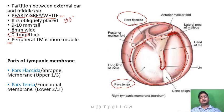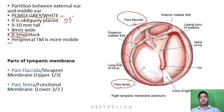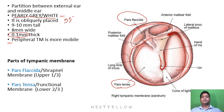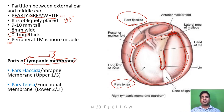What is the difference between pars tensa and pars flaccida? Pars tensa consists of all three layers of the tympanic membrane: the outer epithelial layer facing the external auditory canal, the middle fibrous layer, and the inner endothelial layer. The tympanic membrane is derived from all three embryonic layers — ectoderm gives the outer epithelial layer, mesoderm gives the middle fibrous layer, and endoderm gives the inner endothelial layer.